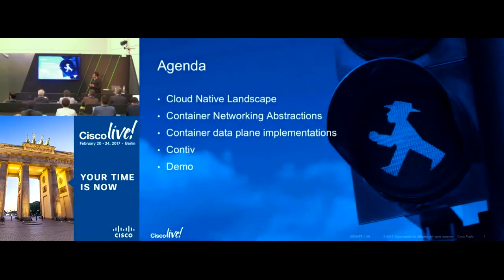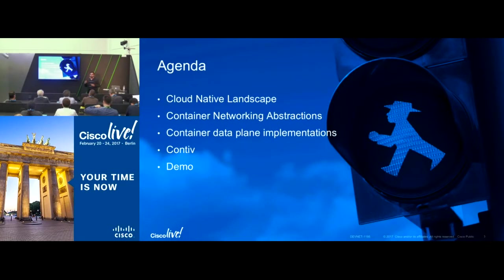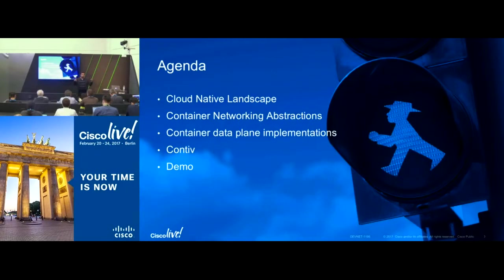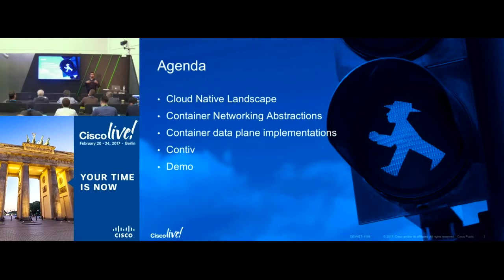In the next 45 minutes, we'll quickly touch upon the cloud-native landscape and the ecosystem — how containers and microservices are evolving. Then we'll touch upon container networking abstractions: what Docker, Kubernetes, and OpenShift use to program the infrastructure. We'll also cover data plane implementation details of common networking within Docker and Kubernetes, including fundamental networking requirements and default reference implementations.